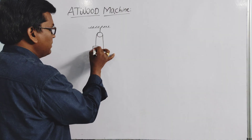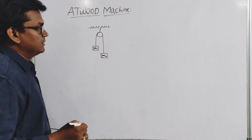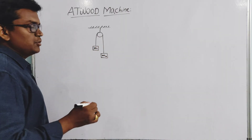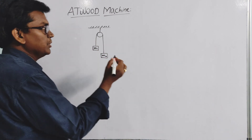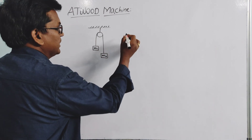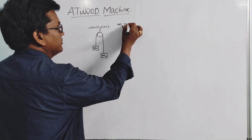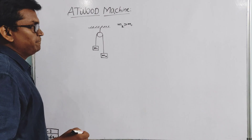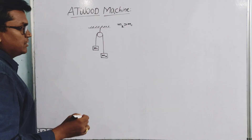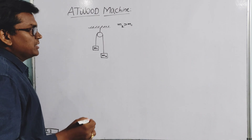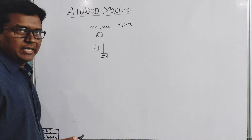Here we have mass m1 and mass m2 connected to a string, which is connected to the pulley. Let us consider that mass m2 is greater than m1. Since m2 is greater than m1, let us draw the free body diagram.